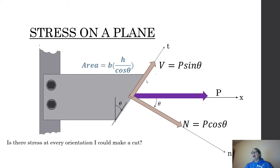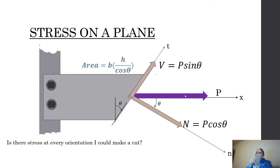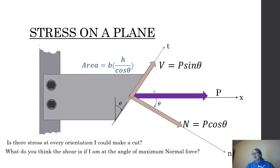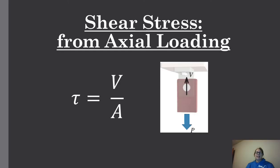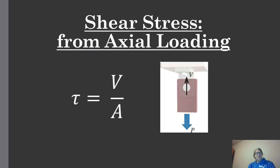This constantly changing stress with orientation sets up Mohr's Circle, which we cover at the end of the course — an easy graphical way to find maximum stress values at any orientation. To summarize: shear stress is tau (τ), meaning force parallel to the plane; normal stress is Sigma (σ), meaning perpendicular to the plane. Stress equals force over area. Examples and practice problems are coming next — please reach out with any questions.